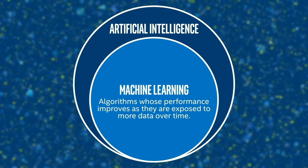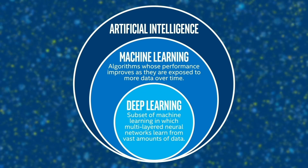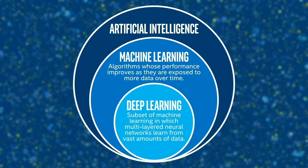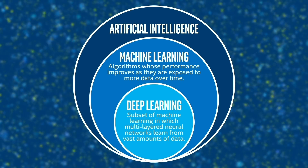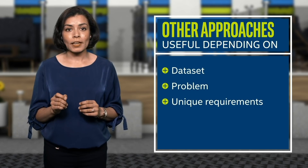Machine learning can be defined as machine algorithms whose performance keeps improving as they're exposed to more data over time. A subset of machine learning is deep learning, or DL, where multi-layered neural networks learn from vast amounts of data. Deep learning is the branch of AI that has gained huge popularity and adoption in recent years. The nexus of AI developments in the near future is centered around deep learning, with other approaches all playing important roles depending on the dataset, problem, and unique requirements. The framework and examples provided in the guide are based on deep learning.